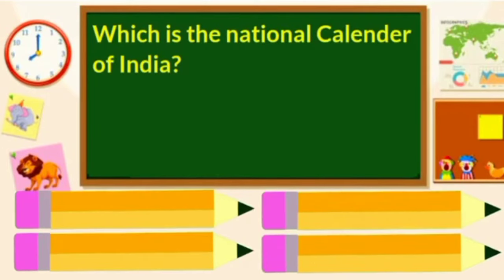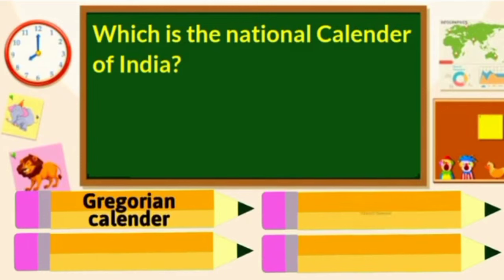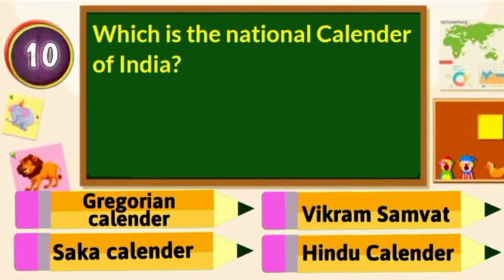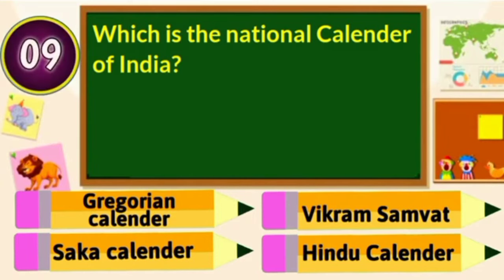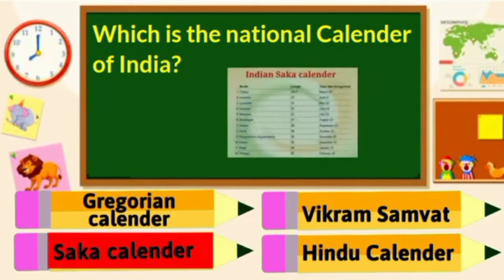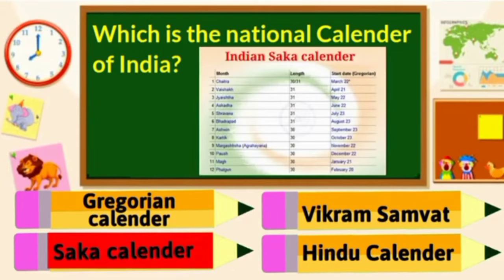Which is the National Calendar of India? Gregorian Calendar, Vikram Samwat, Saka Calendar or Hindu Calendar? Saka Calendar is the National Calendar of India.